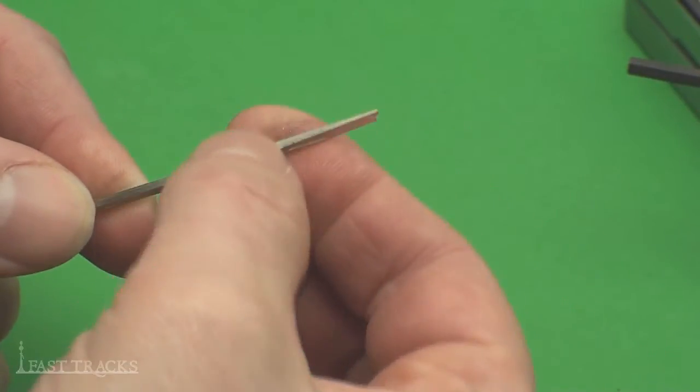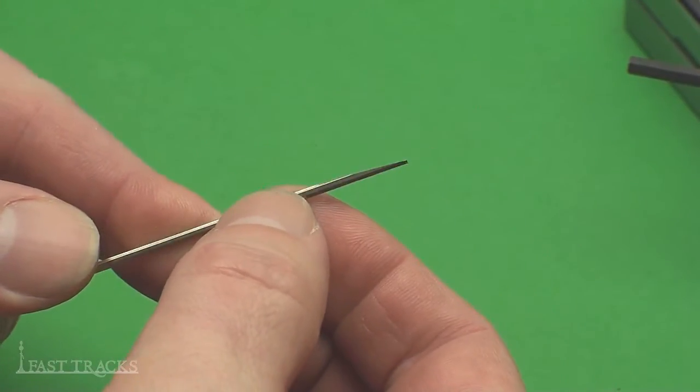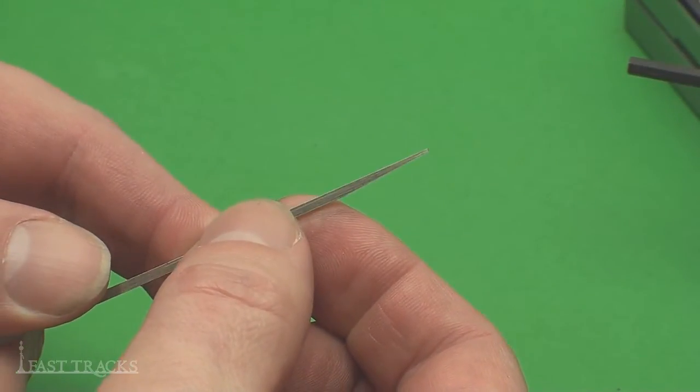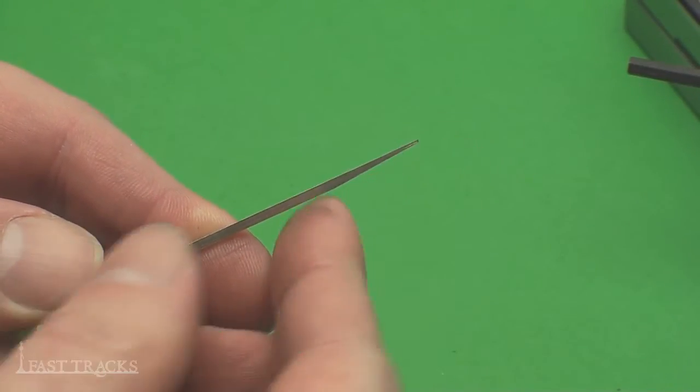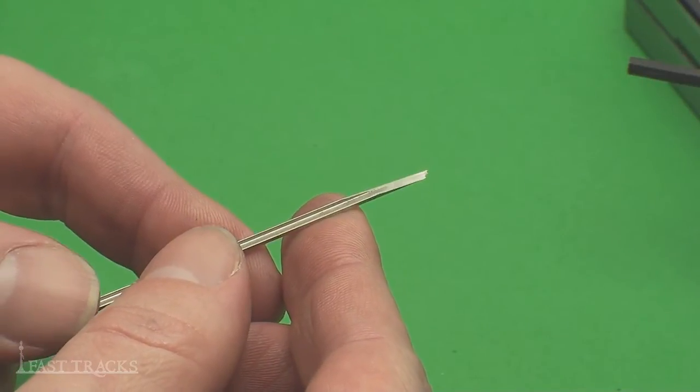It comes off pretty easily. Just run your fingernail across it like that. But you can see how precisely this has been filed now. It's a really deliberate angle on there. This is one half of a number six frog point.